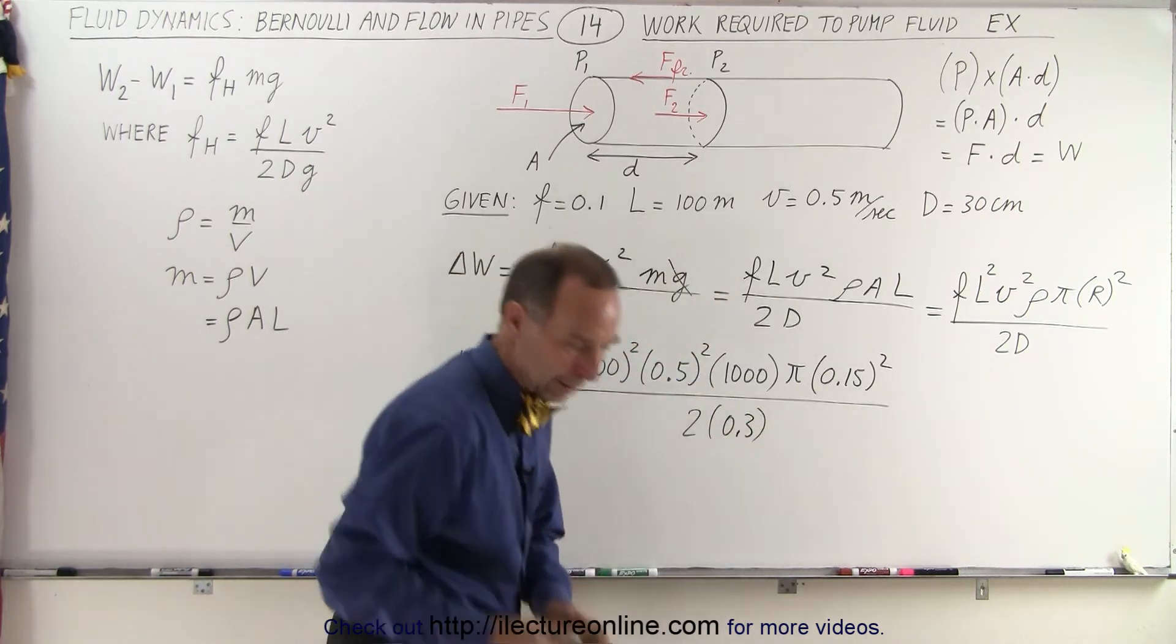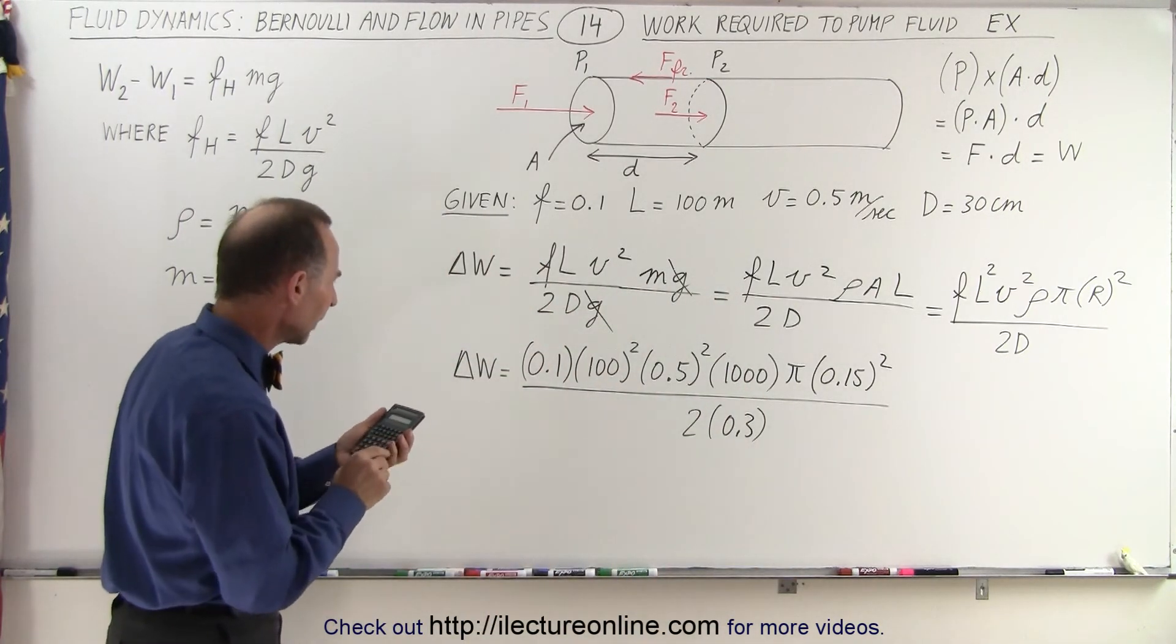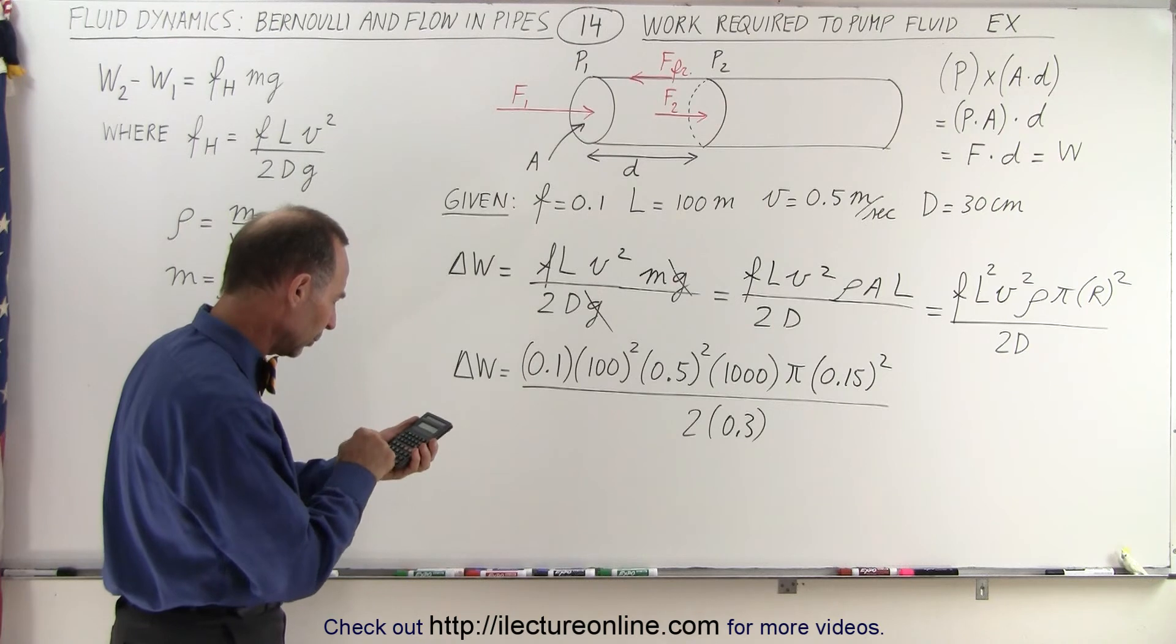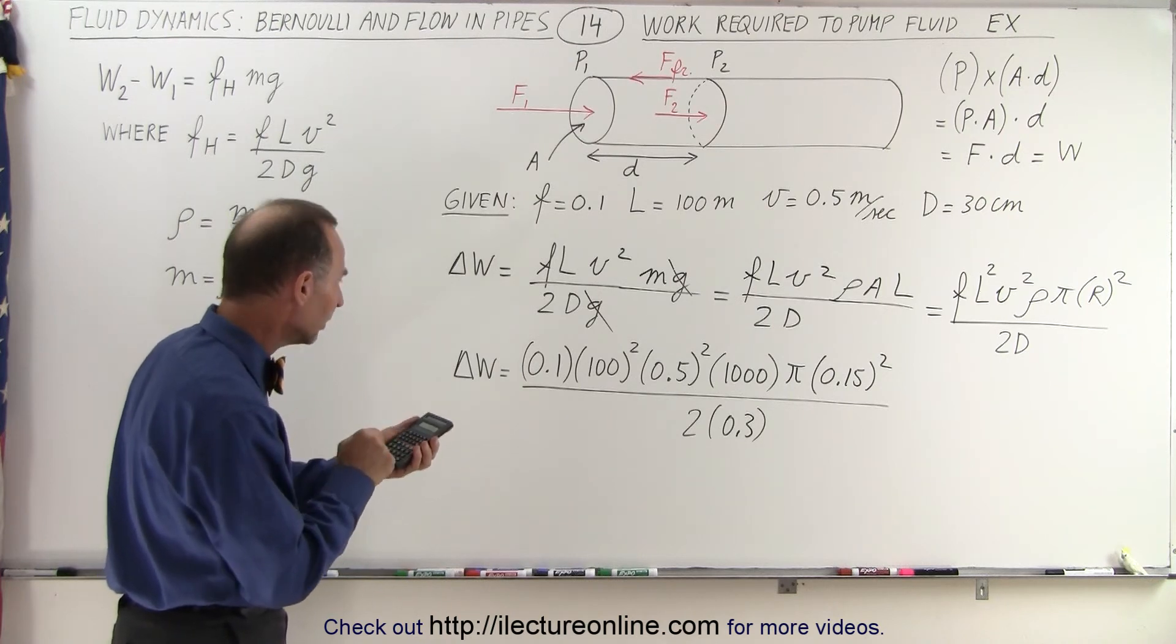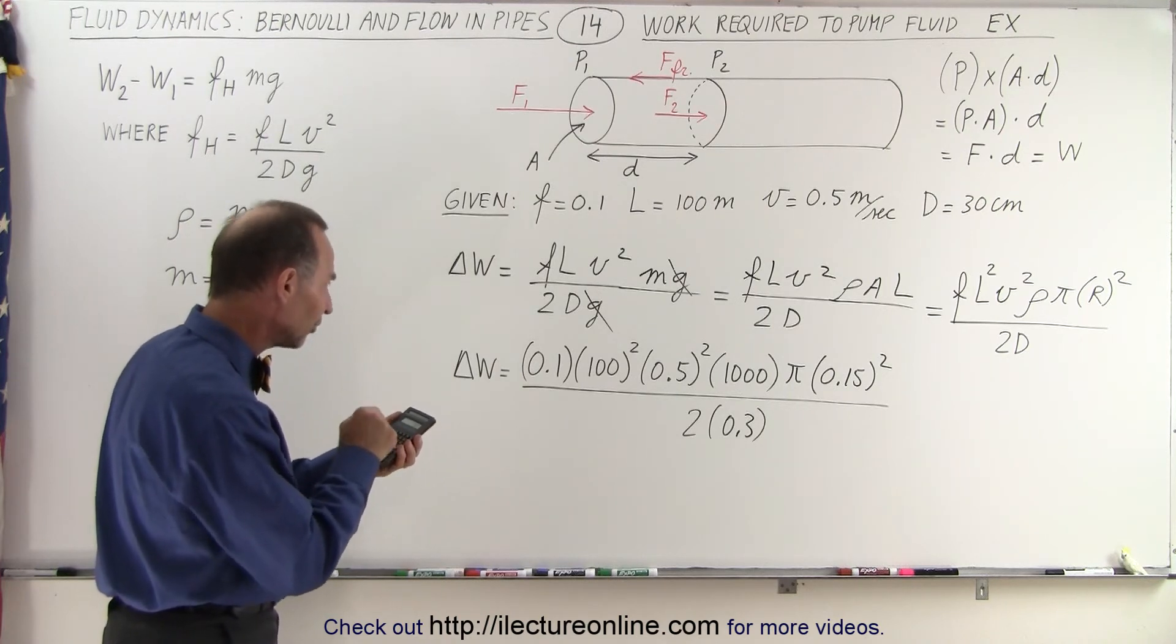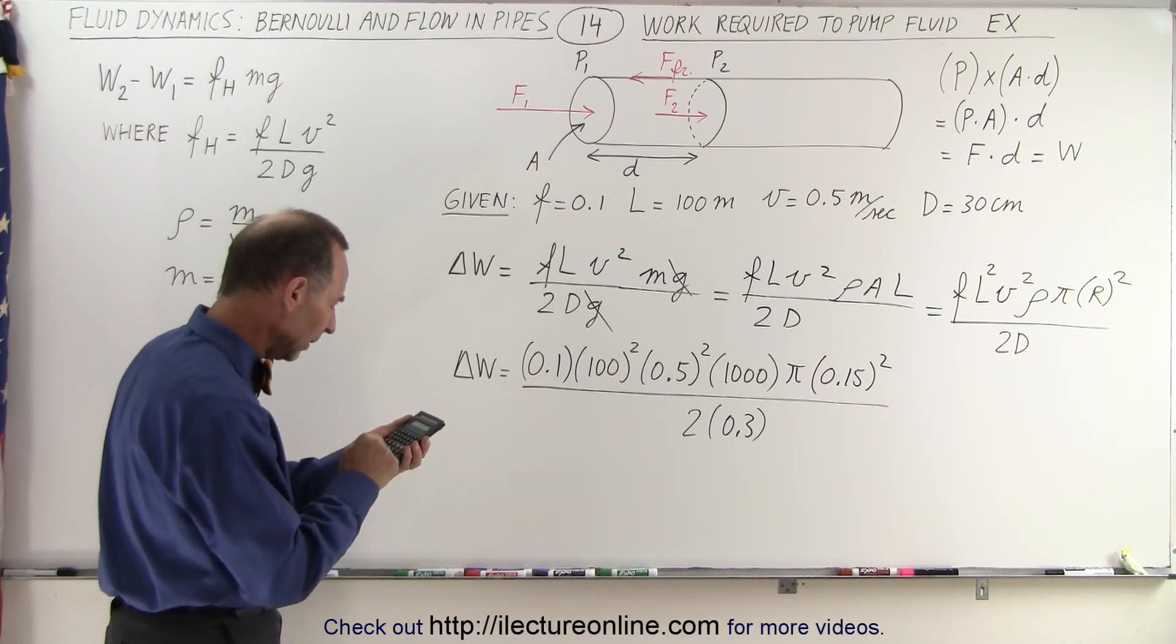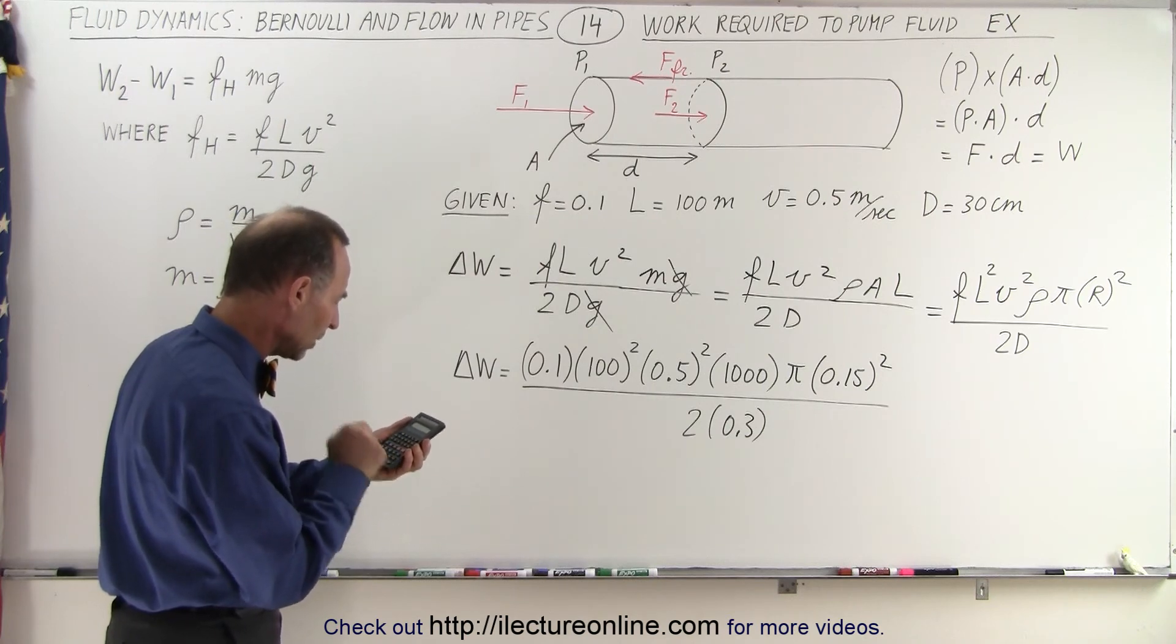All right, let's see what we got. So 0.1 times 100 squared, 0.1 times 100 squared, times 0.5 squared, times 1,000, times pi, times 0.15 squared, divided by 2, divided by 0.3,